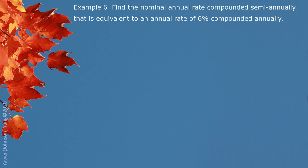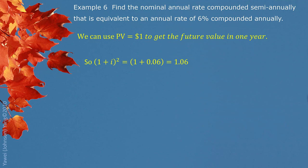Example 6: Find the nominal annual rate compounded semiannually that is equivalent to an annual rate of 6% compounded annually. We can use a $1 present value for convenience to get the future value in one year. If they are equivalent, they get the same future value after one year. For the nominal annual rate compounded semiannually, the periodic interest rate I is unknown. For one year, there are two compounding periods, giving us the future value expression for the first part.